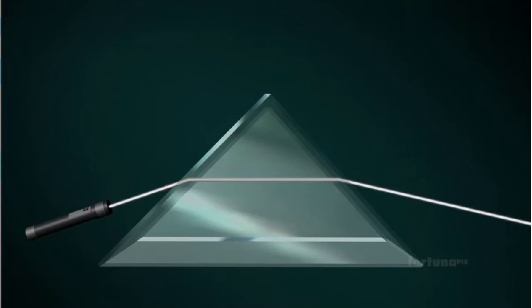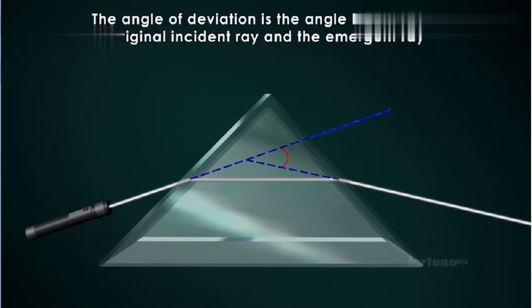The overall reflection of a light ray through a prism is expressed as the angle of deviation theta. The angle of deviation is the angle between the original incident ray and the emergent ray.